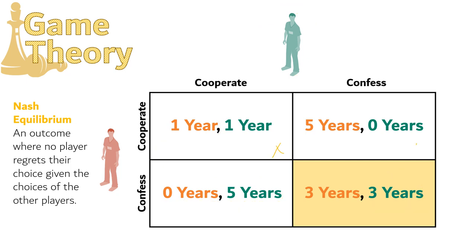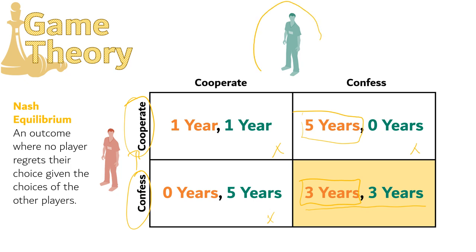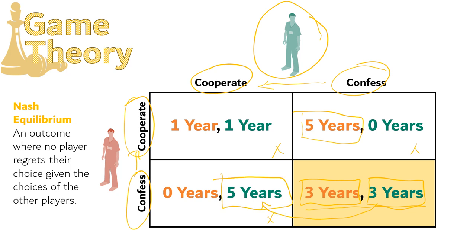So none of those three are Nash Equilibria. But then we can look at the one already identified as the Nash Equilibrium. Player A is getting three years — if they change from confess to cooperate, they would end up with five years. That's worse, so player A does not regret their decision. Player B is also getting three years in prison. If they go from confess to cooperate, they would get five years — that's worse. So player B also does not regret their choice.